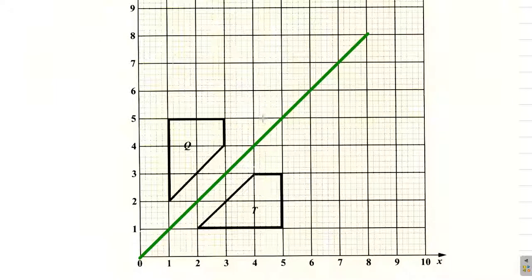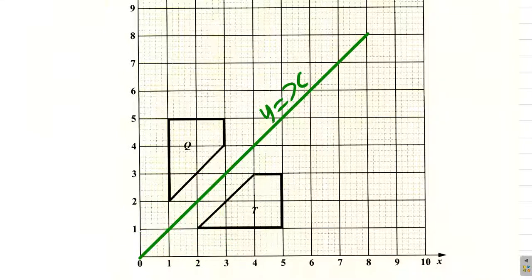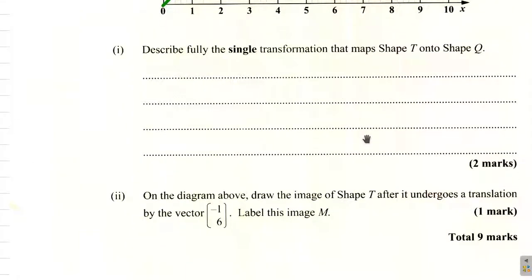You can see here that it is the line y equals x. This is the line y equals x. When x is 1, y equals 1; x equals 2, y is 3; x is 3, y equals x. So that is the single transformation.